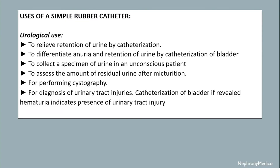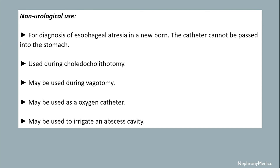The urological uses of the simple rubber catheter include: to relieve retention of urine by catheterization; to differentiate anuria from retention of urine by catheterization of the bladder; to collect a specimen of urine in a conscious patient; to assess the amount of residual urine after micturition; for performing cystography; and for diagnosis of urinary tract injuries. Catheterization of the bladder, if it reveals hematuria, indicates the presence of a urinary tract injury.